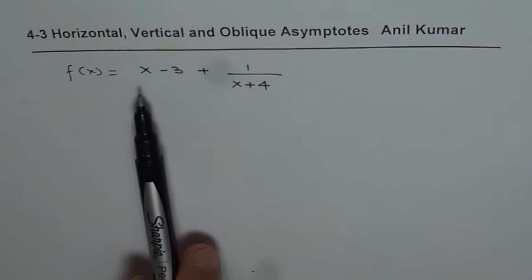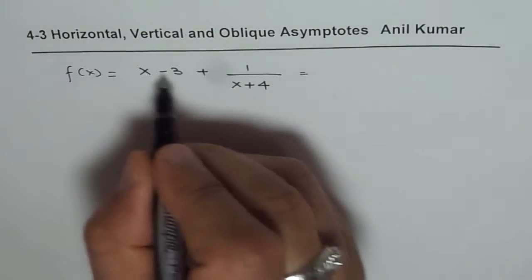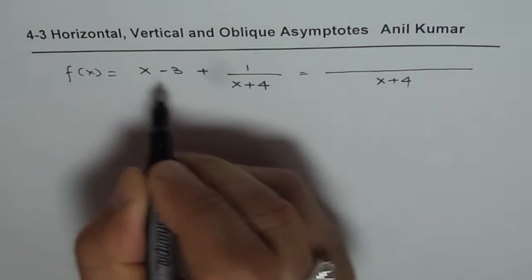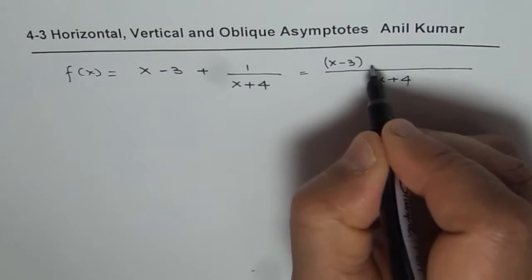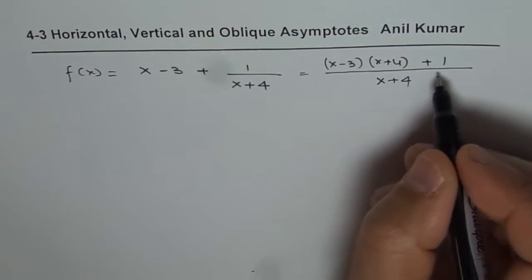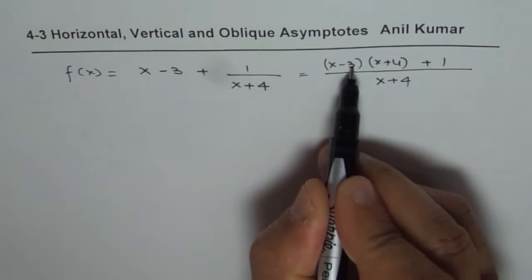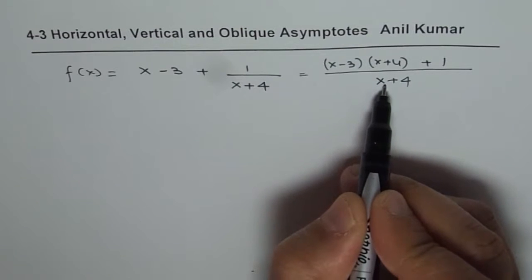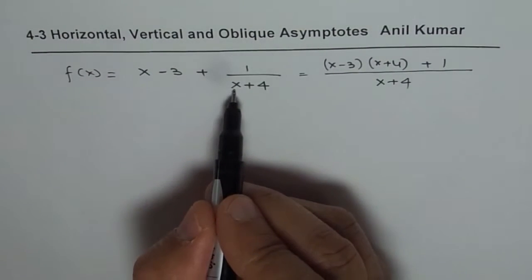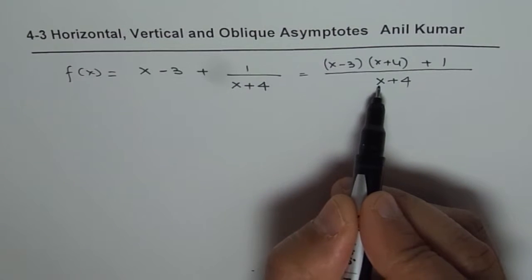If you have a function which is x minus 3 plus 1 over x plus 4, you could also see this function by cross-multiplying: the denominator becomes x plus 4, and the numerator becomes x minus 3 times x plus 4, plus 1. So that's a rational function where the degree of the numerator is 1 higher than that of the denominator — it's quadratic over linear. So you expect an oblique asymptote. And the denominator is 0 for x equals minus 4, so you also expect a vertical asymptote.